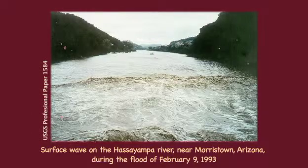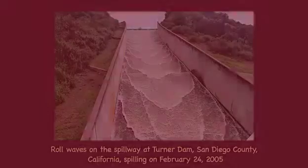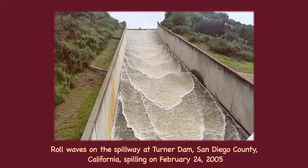This photo shows a surface wave on the Hasayampa River near Morristown, Arizona, during the flood of February 9, 1993. Surges are relatively fast changes in flow depth which may originate in sudden gate closures. Roll waves are small wave trains resulting from flow instability in steep artificial channels. This photo shows roll waves on the spillway at Turner Dam, San Diego County, California, spilling on February 24, 2005.